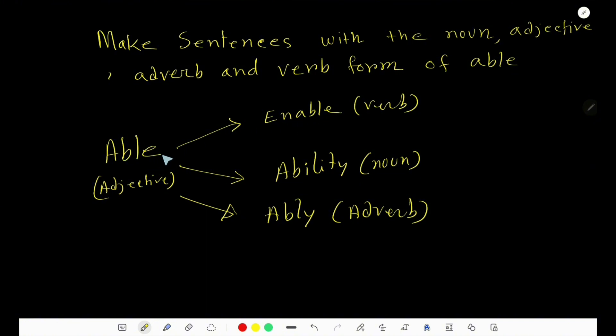The verb form of able is enable, the noun form of able is ability, and the adverb form of able is ably.